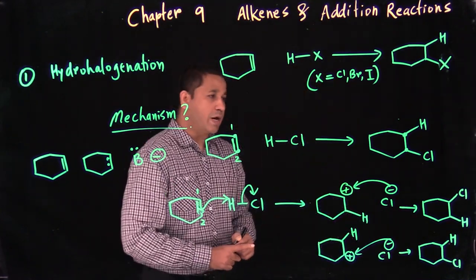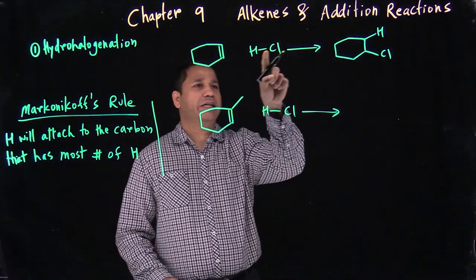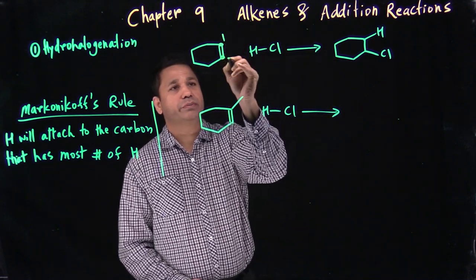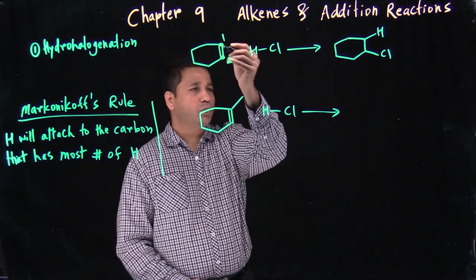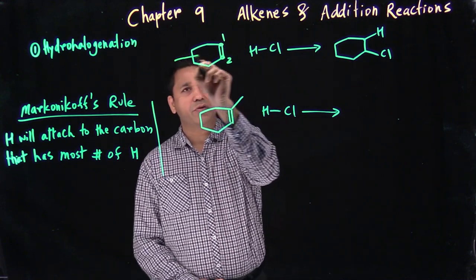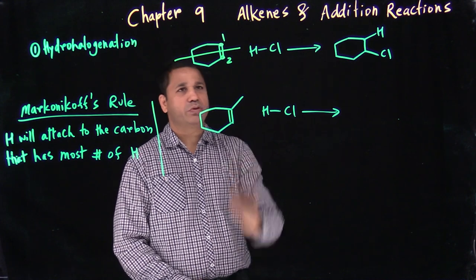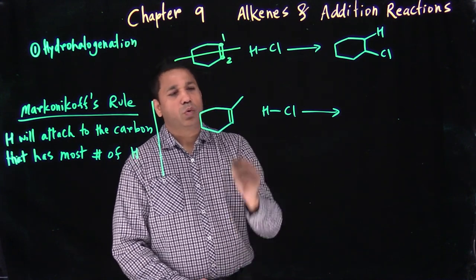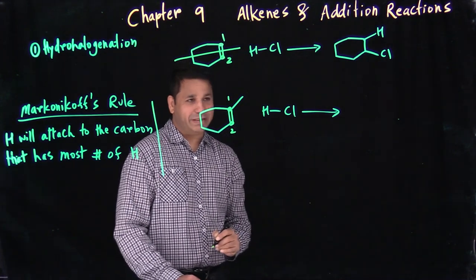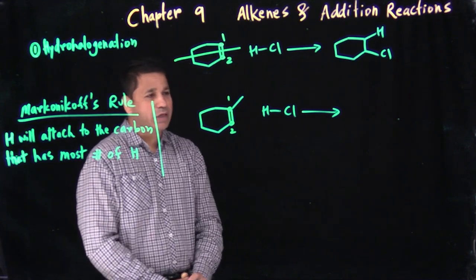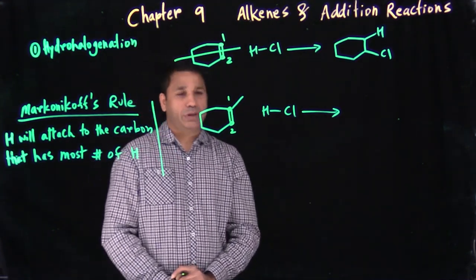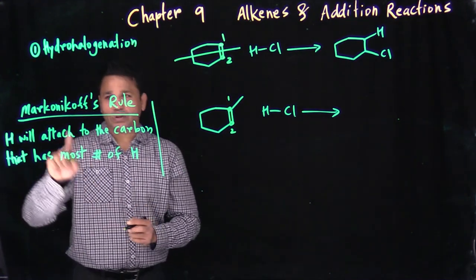When you have a double bond, you can attach H and Cl across it. In the symmetric case, carbon-1 and carbon-2 are the same, so it makes no difference which carbon gets the hydrogen. But when the two carbons are not the same — there's no symmetry — you have to be careful where to put the hydrogen and where to put the chlorine.